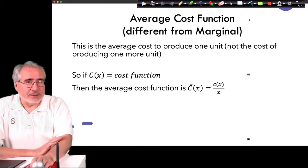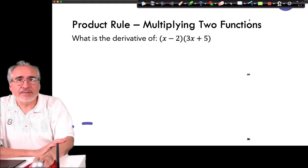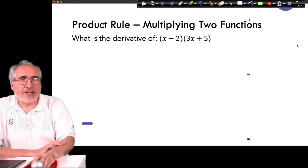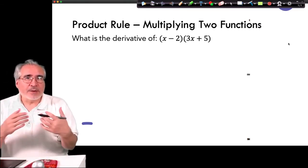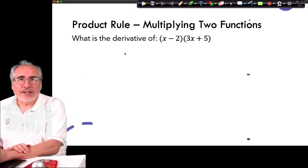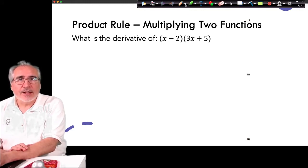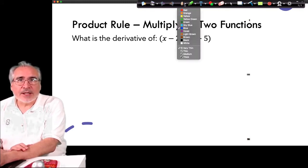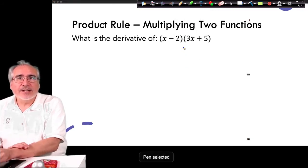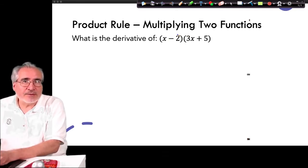In class we'll review some of the homework problems. Now let's motivate the product rule by looking at how we'd get the derivative of a product of two functions. We have X minus 2 as one function and 3X plus 5 as another. As we look at these, we realize we don't yet have a direct way to find this derivative.